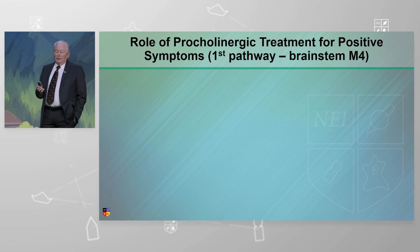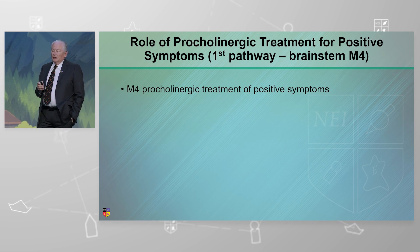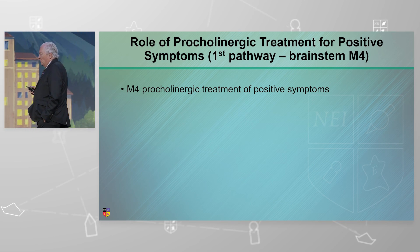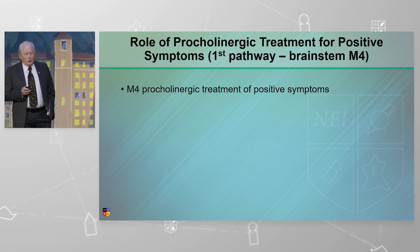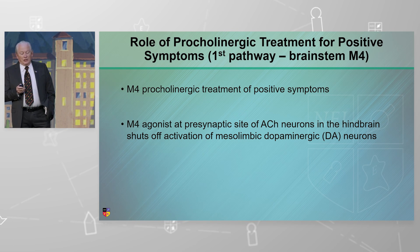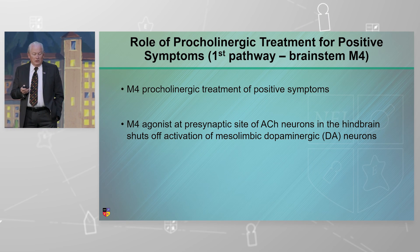Now, enter this stimulation or procholinergic treatment for delusions and hallucinations, positive symptoms. And there's two pathways. Let's talk about the first one, the brainstem M4. M4 stimulation, procholinergic treatment of positive symptoms. You give an agonist for M4 at those presynaptic sites I showed you on those two cholinergic neurons, one in the hind brain, and we'll show you later one in the striatum.